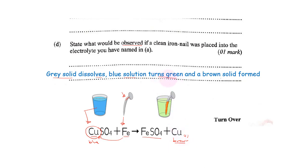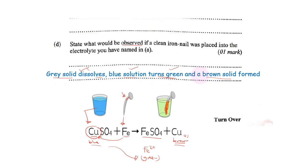The copper sulfate solution will turn green because the presence of iron 2+ ions is well known for having a green coloration. So the blue solution will turn green, and we shall also see a brown solid being formed due to the formation of copper, coating on the nail. So what we observe is: the gray solid dissolves, the blue solution turns green, and a brown solid is formed. That's all for this question. Thanks for watching. Stay safe.